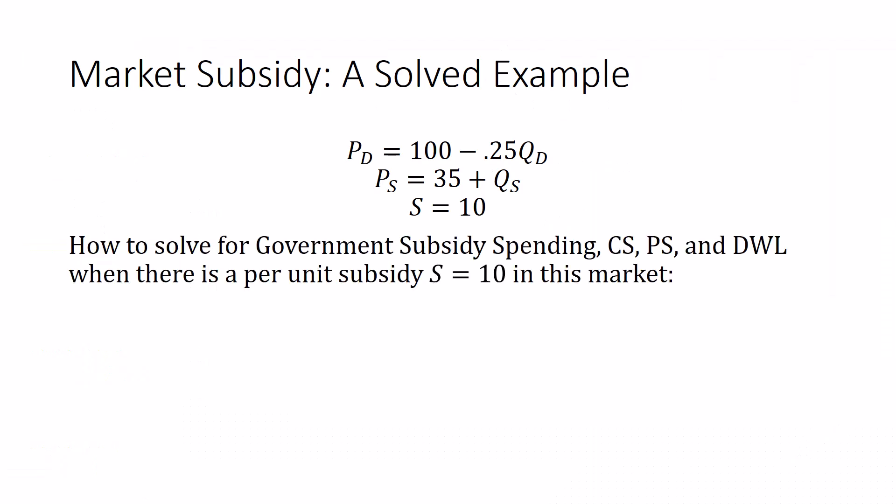I'm going to show you how to solve for how much money the government spends on the subsidy, the consumer surplus, the producer surplus, and the deadweight loss when there's a subsidy of $10 in this market. Along the way, I should be able to capture every technical question I can ask about this model. I'll still leave the intuition for some side studying, but I'll try to catch some of it along the way.